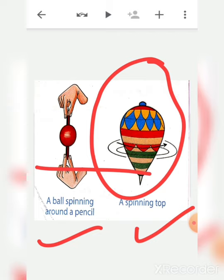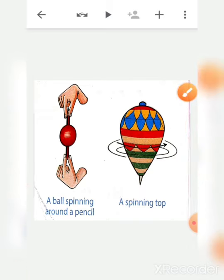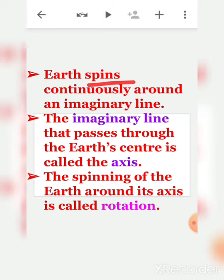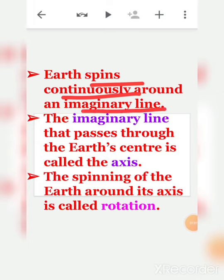This is what our earth does — it spins continuously around an imaginary line. An imaginary line means something which is not real, something we cannot see but is created in our mind. The imaginary line that passes through the earth's center is called the axis.